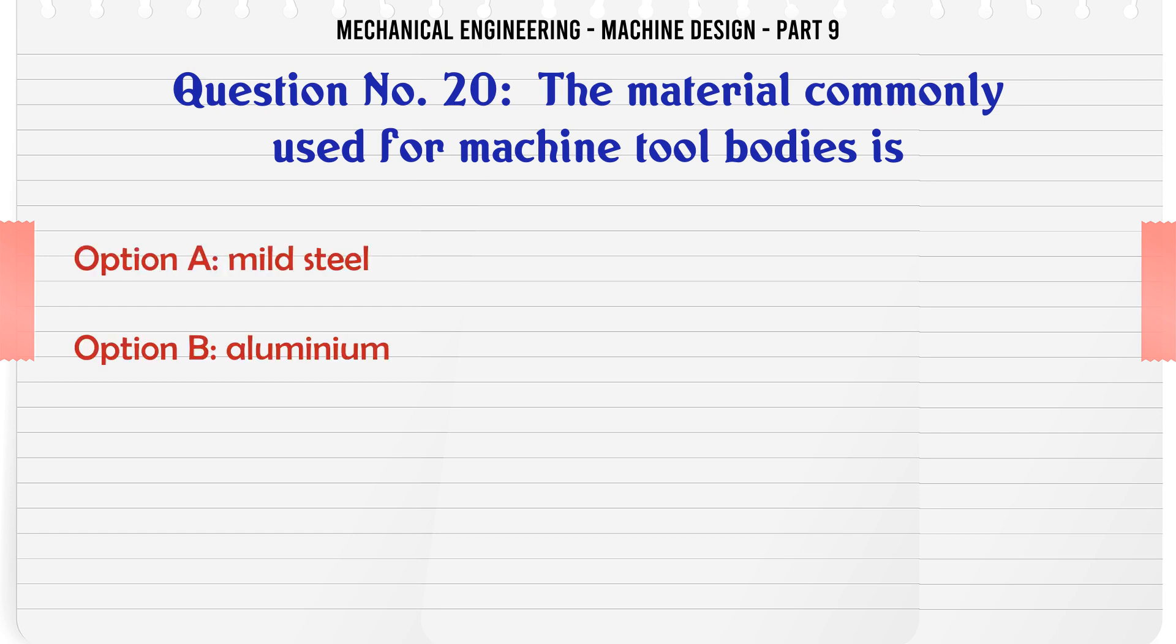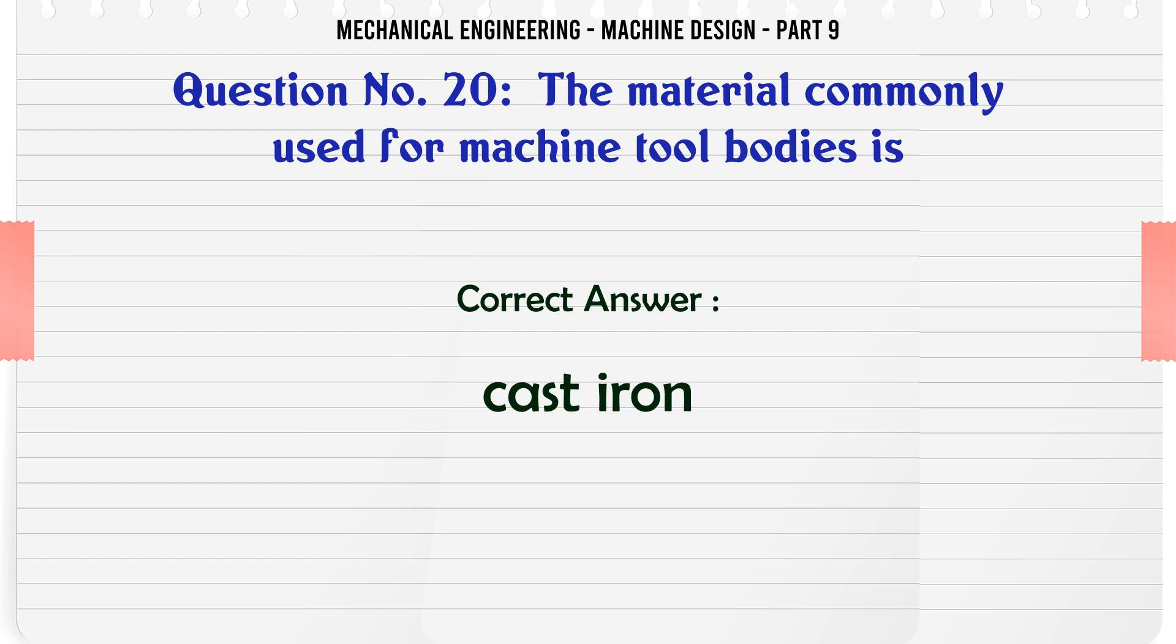The material commonly used for machine tool bodies is: A. Mild steel, B. Aluminium, C. Brass, D. Cast iron. The correct answer is Cast iron.